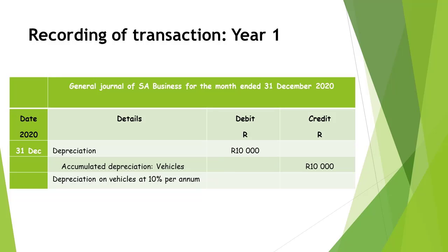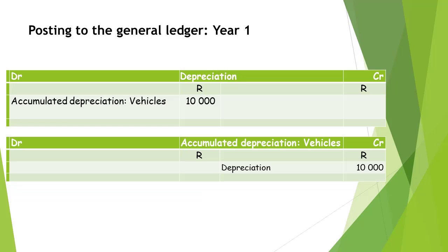Once this is done, a short narration explaining what the transaction was is written in the next row. When posting the transaction to the General Ledger, the depreciation account will be debited with R10,000 and the accumulated depreciation for vehicles account will be credited with R10,000.